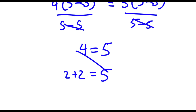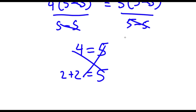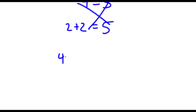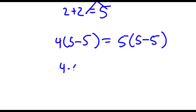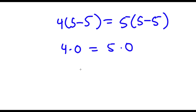However, this is actually wrong. Somewhere in solving this, I actually made a mistake that you cannot do in mathematics. As you can see here, I had 4 times (5 minus 5) is equal to 5 times (5 minus 5). Now, 5 minus 5 is actually equal to 0. So I have 4 times 0 is equal to 5 times 0. And what I did was divide by (5 minus 5) on both sides — and if you didn't already know, dividing by 0 is not defined.